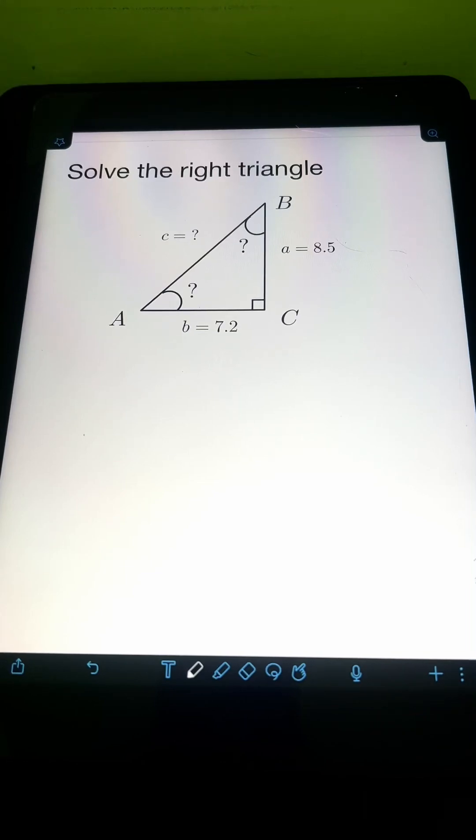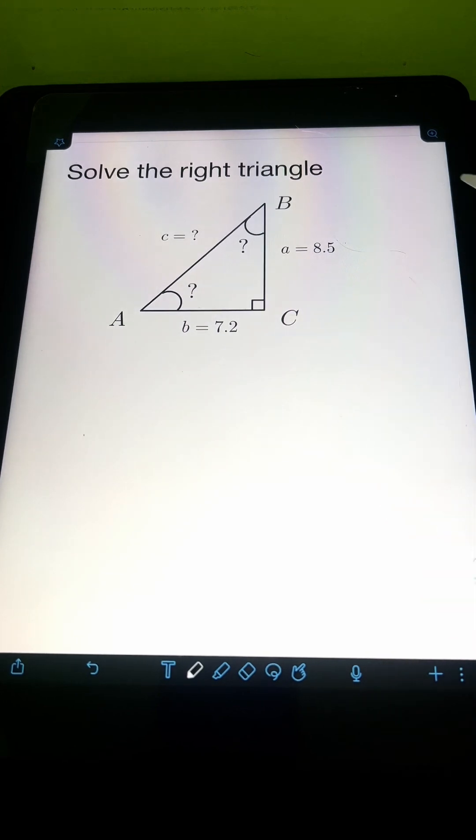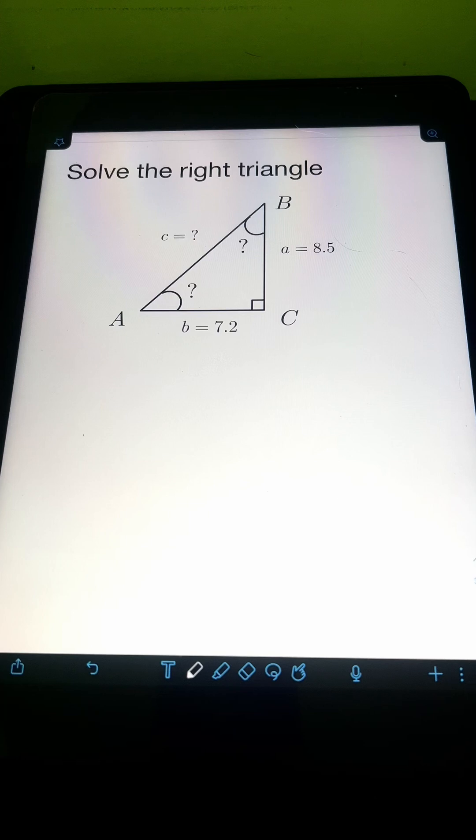Let's try to solve this problem, solve the right triangle. So we have a right triangle ABC with given side A, 8.5, given side B, 7.2. So we need to find the unknown side C and the two unknown angles A and B.